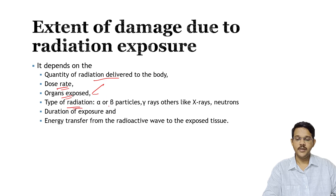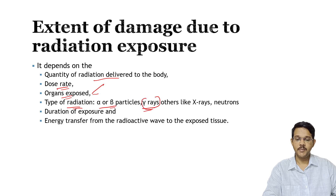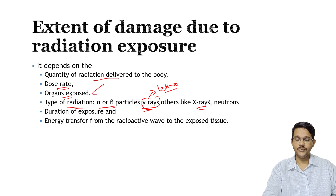Another factor is the type of radiation. The common types of radiation which come from radioactive materials include alpha particles, beta particles, and gamma rays. Among these, gamma rays are the most lethal and can cause the most damage. Other radiation types include x-rays and neutrons, which can also cause radiation injuries.